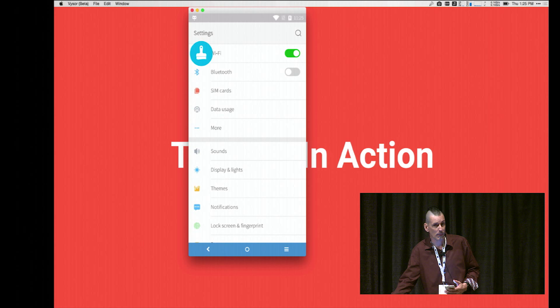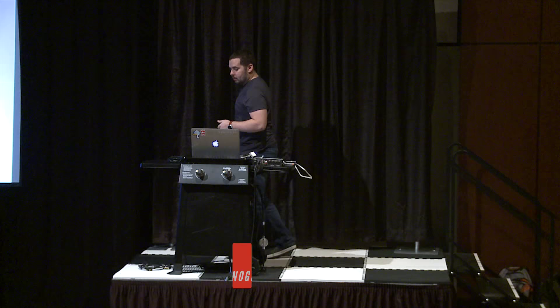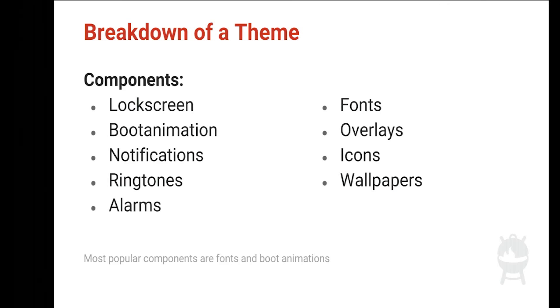Now we're going to talk about how to design themes. There are nine different components you can include inside a theme on Cyanogen: lock screen, boot animation, notifications, ringtones, alarms, fonts, overlays, icons, and wallpapers.